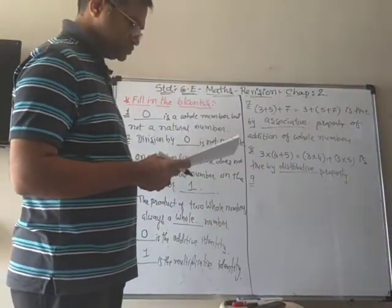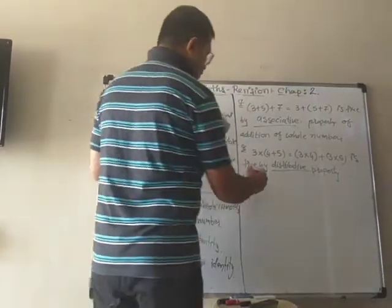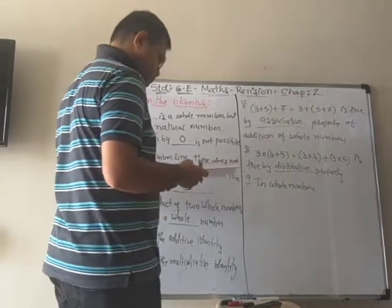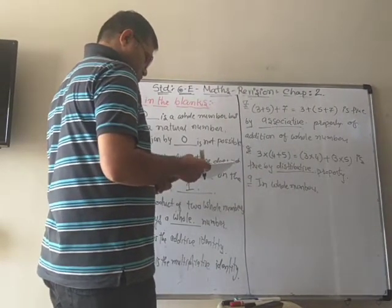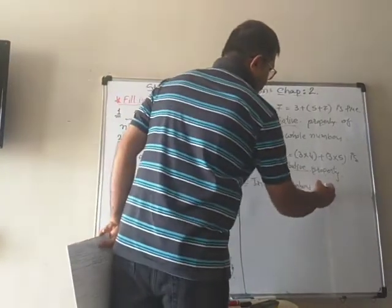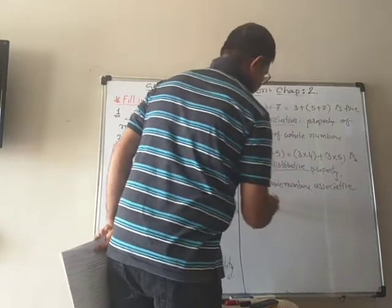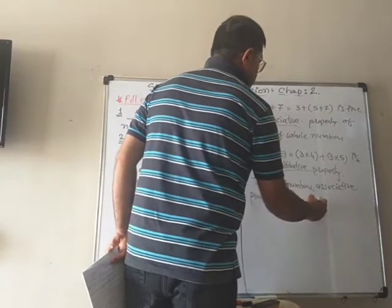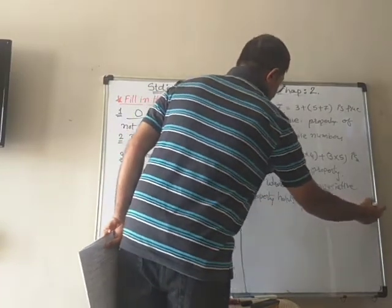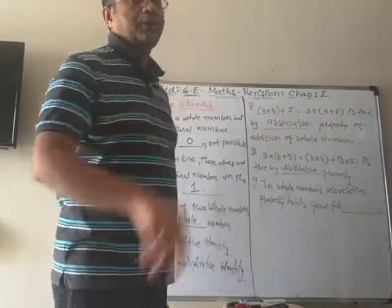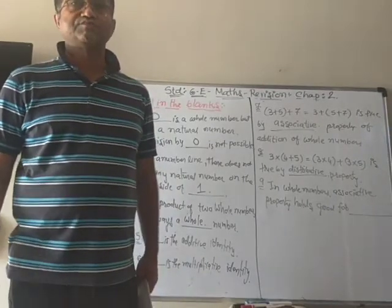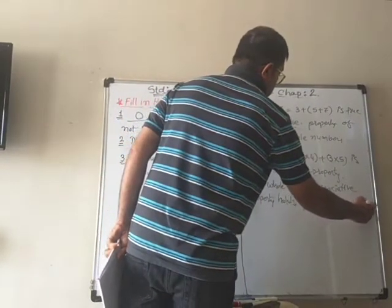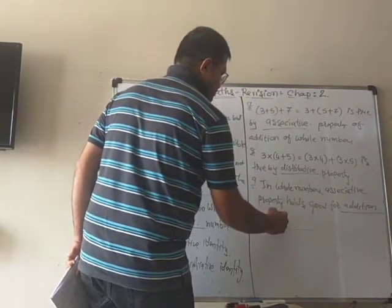In whole numbers, associative property holds good for blank. We know that associative property can be used for both operations — that is addition and multiplication. So you can write down both here: addition and multiplication.